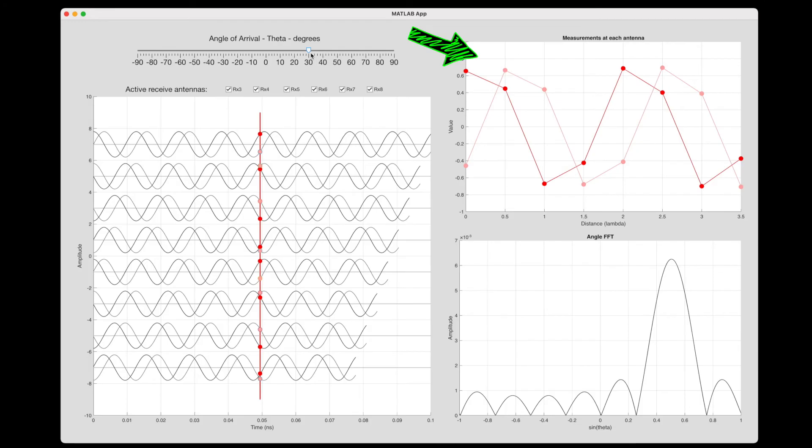And this is where the fast Fourier transform comes in. Taking the FFT of this signal produces this plot, where the x-axis is the sine of theta. And to find the angle, we just need to find where the max peak is, which is around sine theta of 0.5 or an angle of 30 degrees. And that's exactly where the object is.